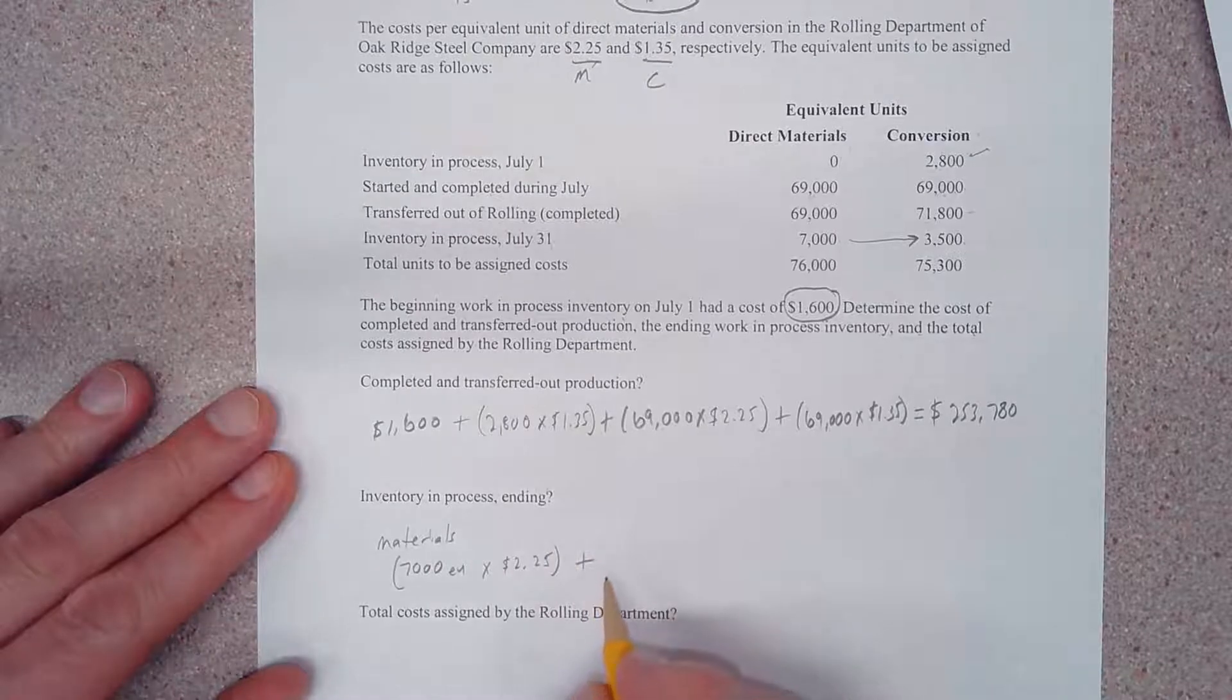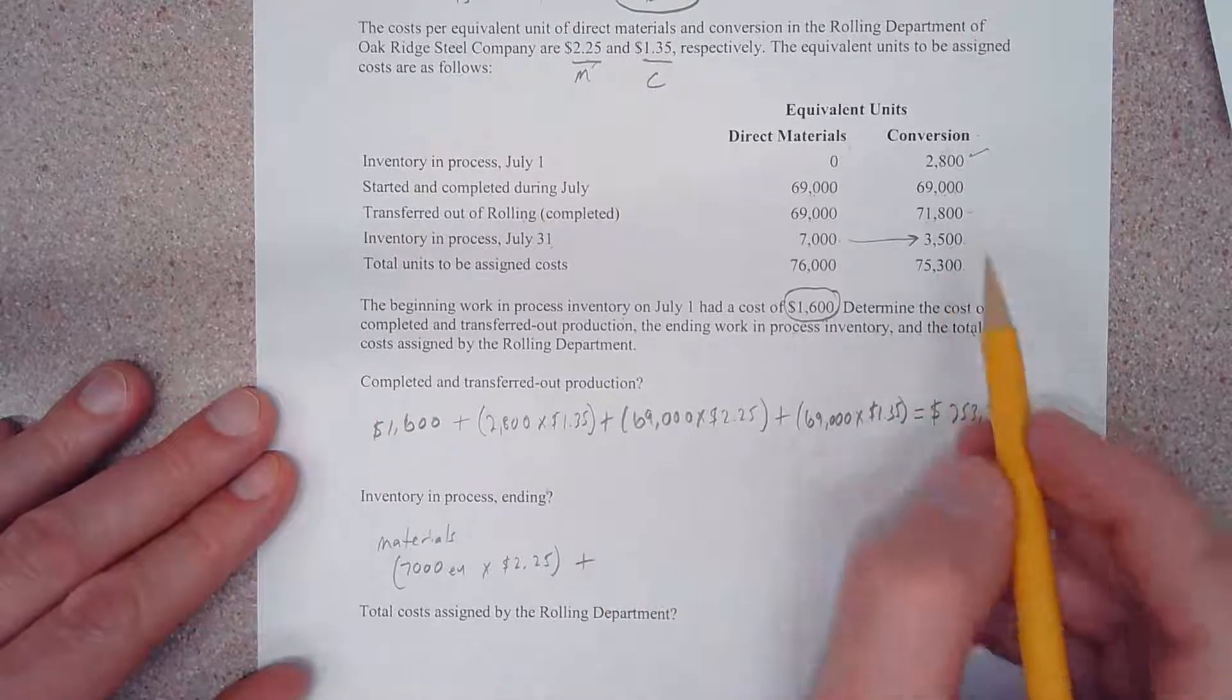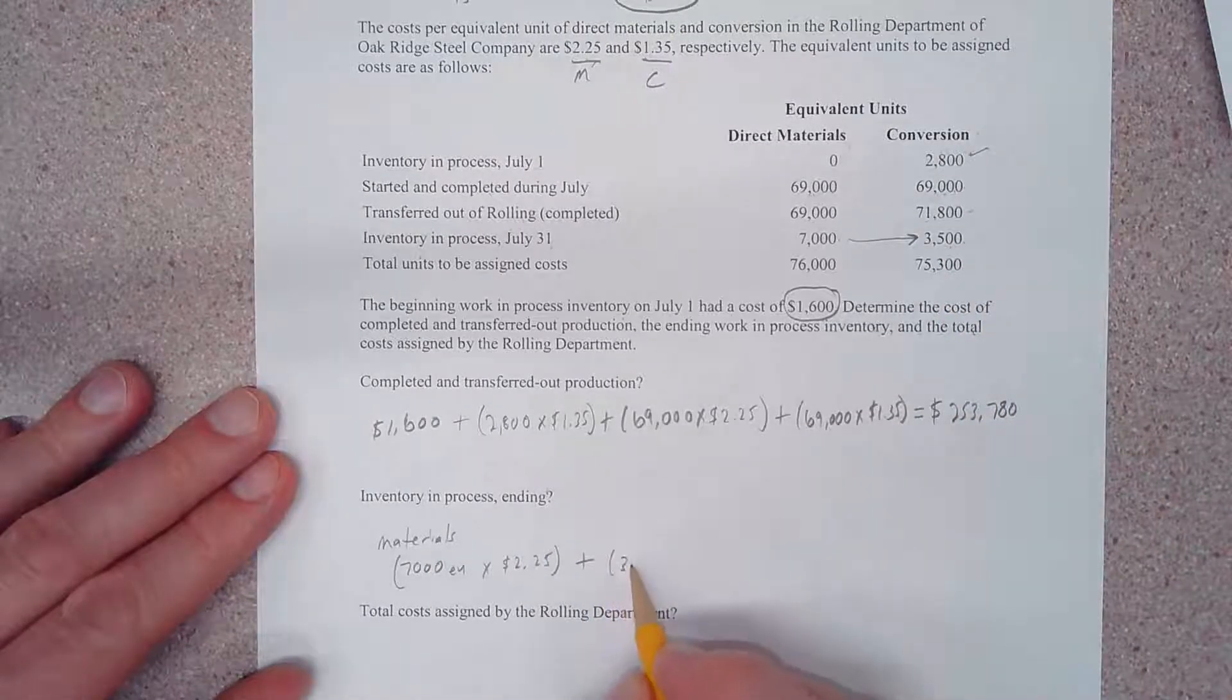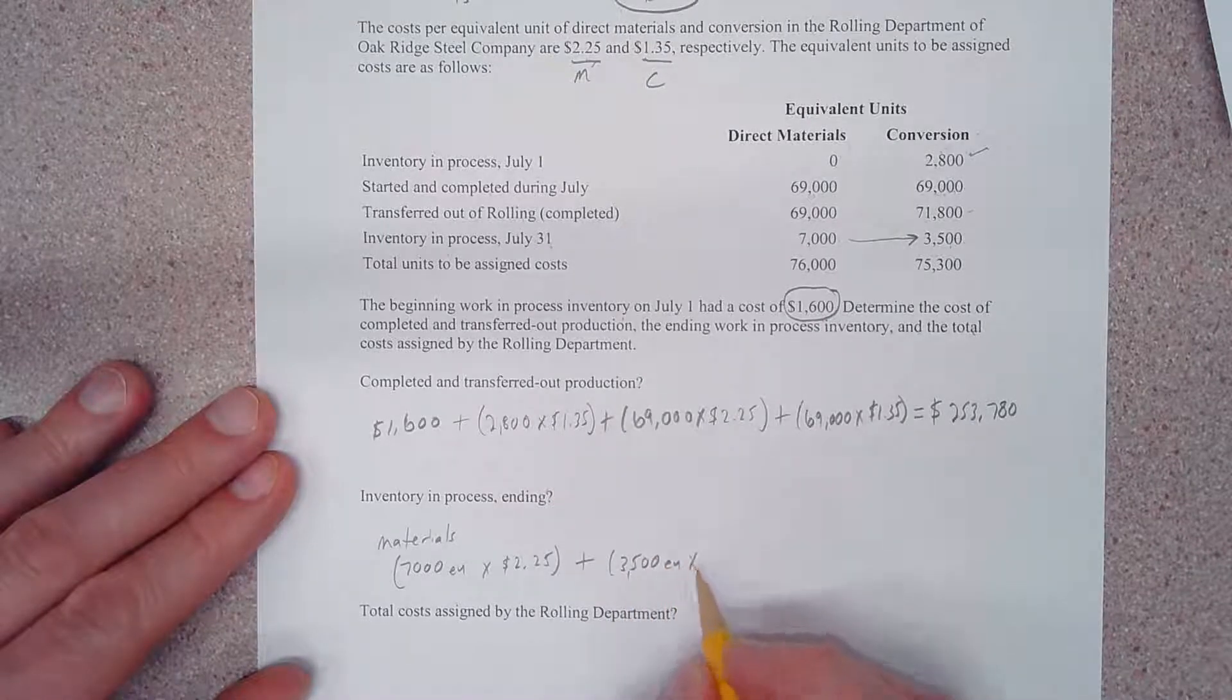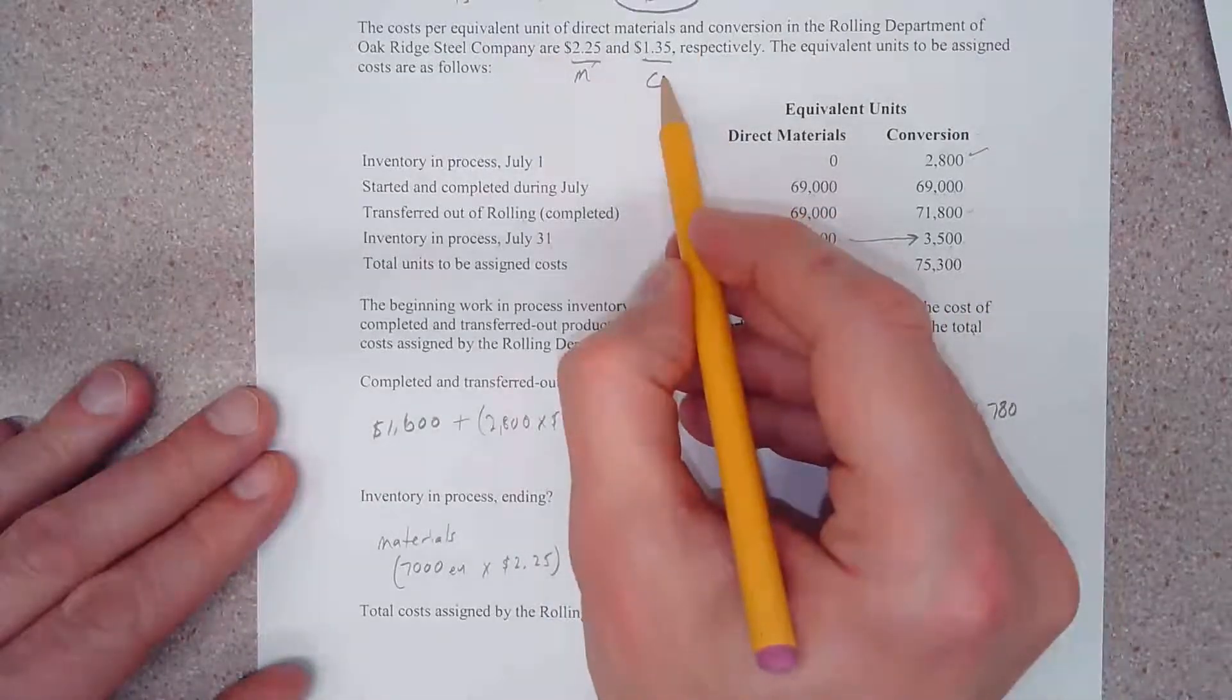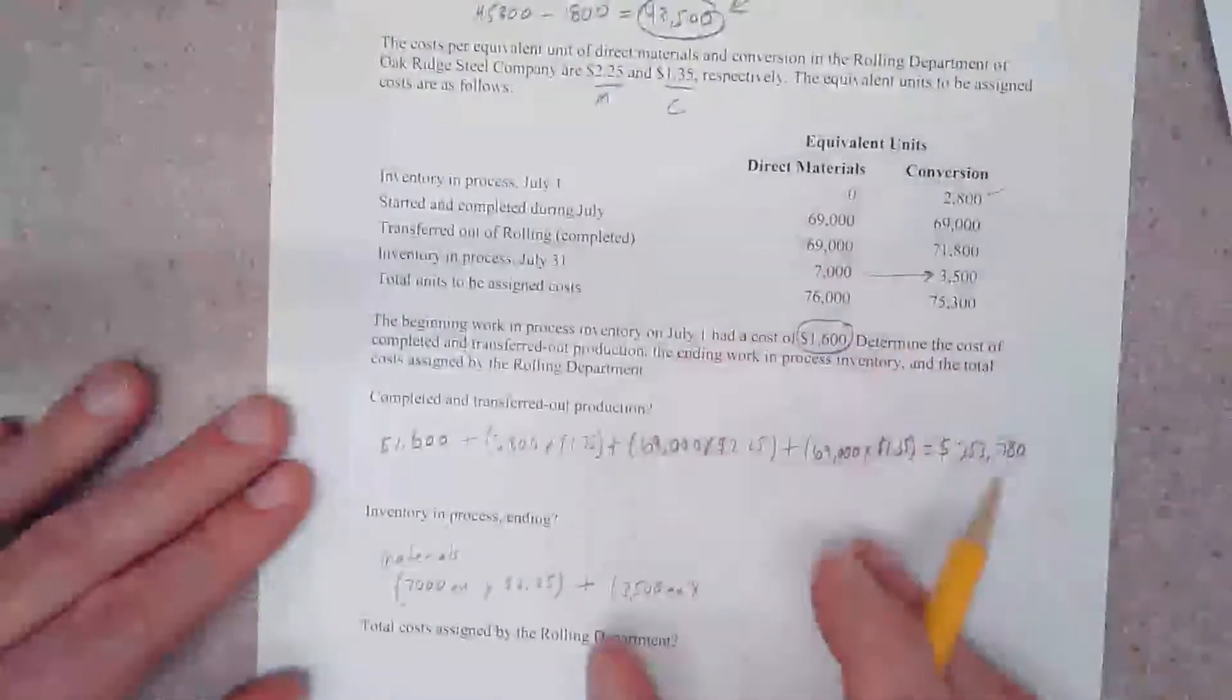And we're going to add to that our 3,500 equivalent units of production, and we're going to multiply that by our rate of $1.35.